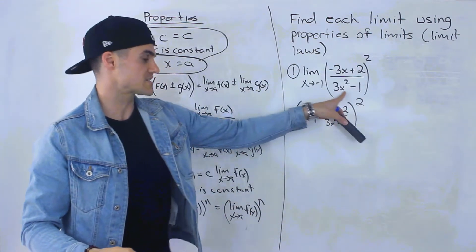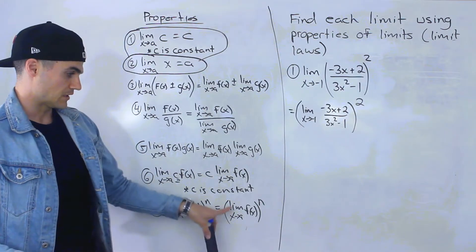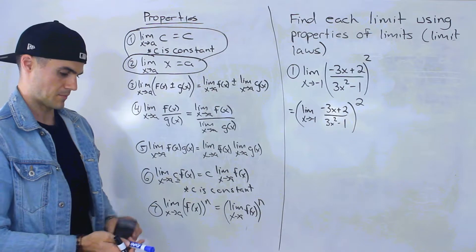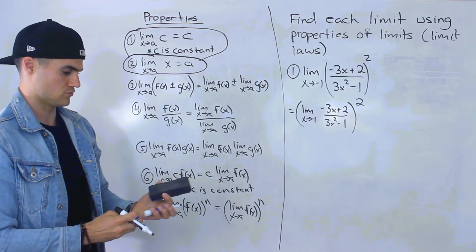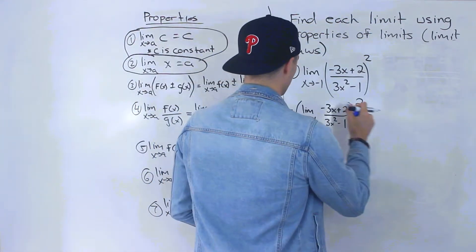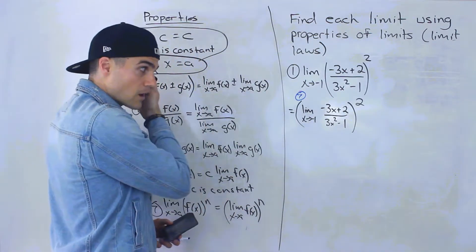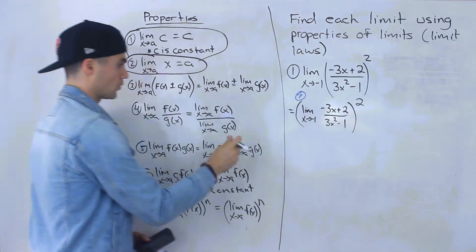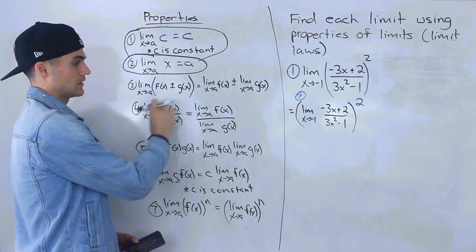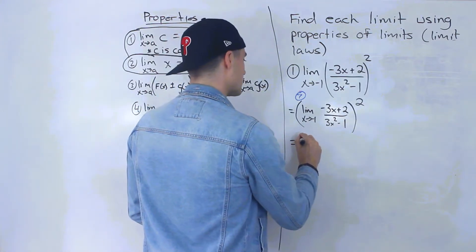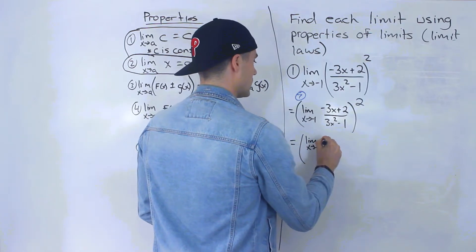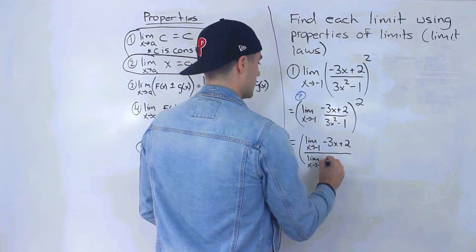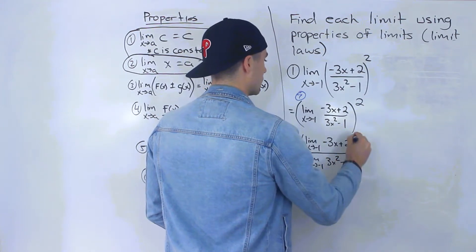That rational function inside the bracket was like f of x, and now we have the limit as x approaches negative one of f of x, with the exponent on the outside — that was law number seven. Now we work with the limit inside the bracket. Since it's a rational function, we apply law number four, distributing the limit to the numerator and denominator: limit as x approaches negative one of negative three x plus two, all over limit as x approaches negative one of three x squared minus one, close bracket, squared.